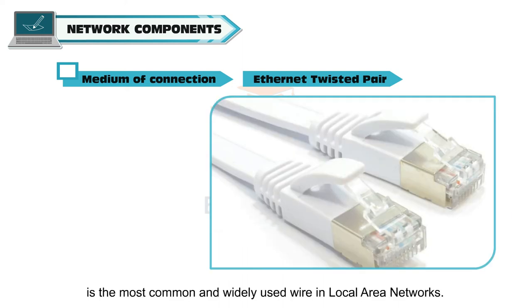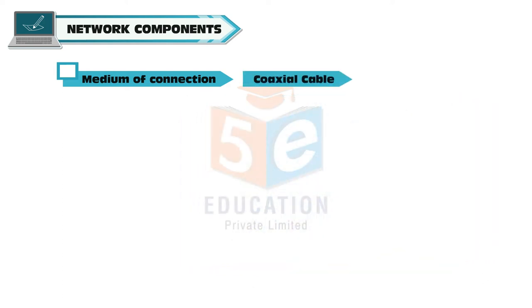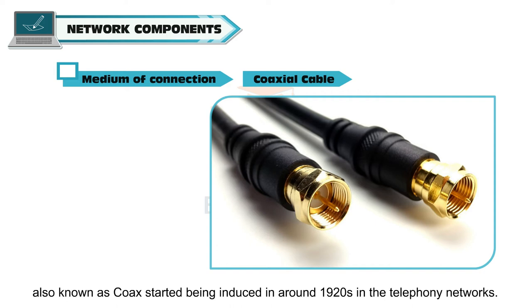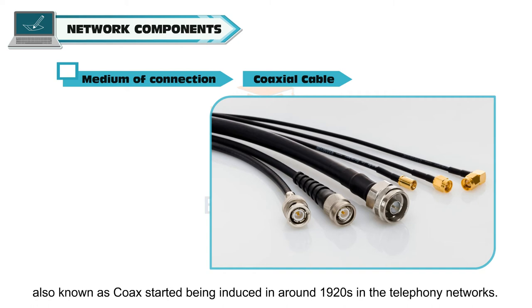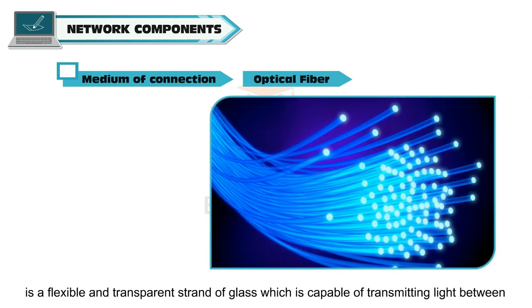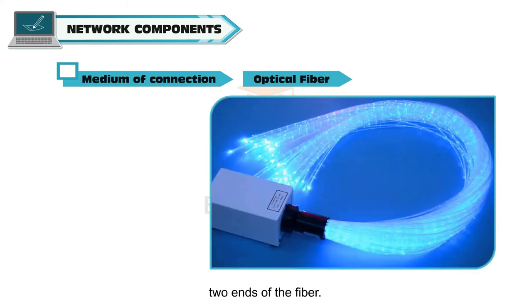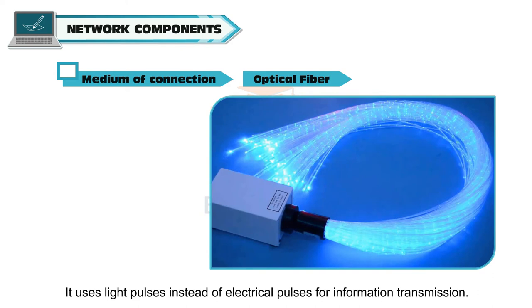Ethernet twisted pair is the most commonly and widely used wire in local area networks, and has improved to speeds of a gigabit per second. Coaxial cable, also known as coax, started being used in around the 1920s in telephony networks and contains a copper wire and a cable. Optical fiber is a flexible and transparent strand of glass capable of transmitting light between two ends of the fiber; it uses light pulses instead of electrical pulses for information transmission.